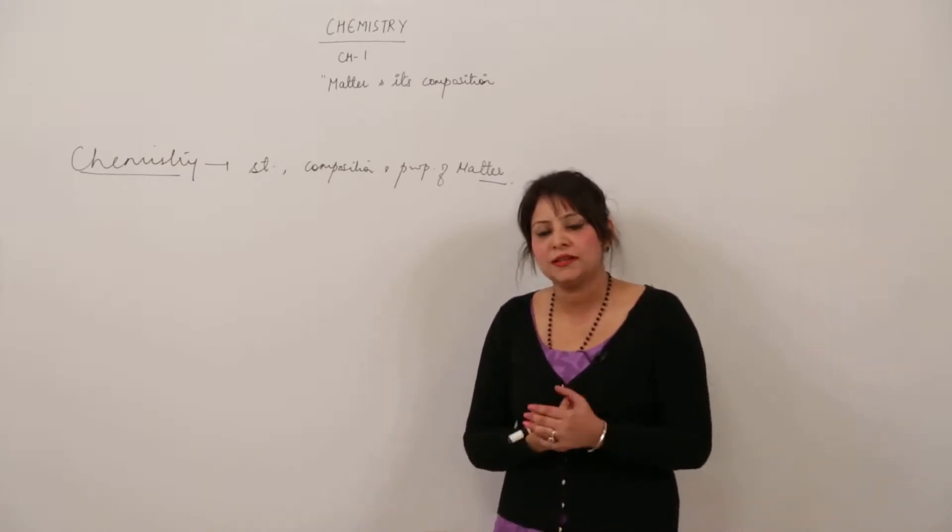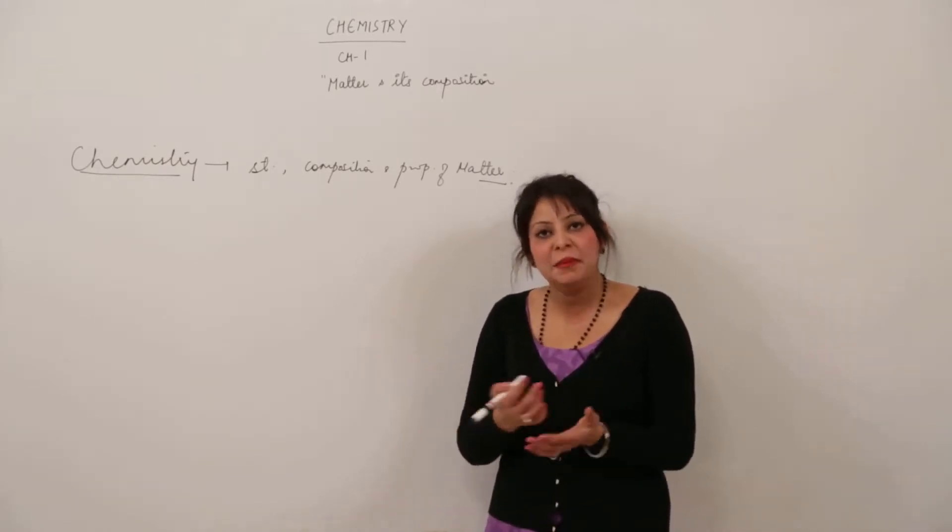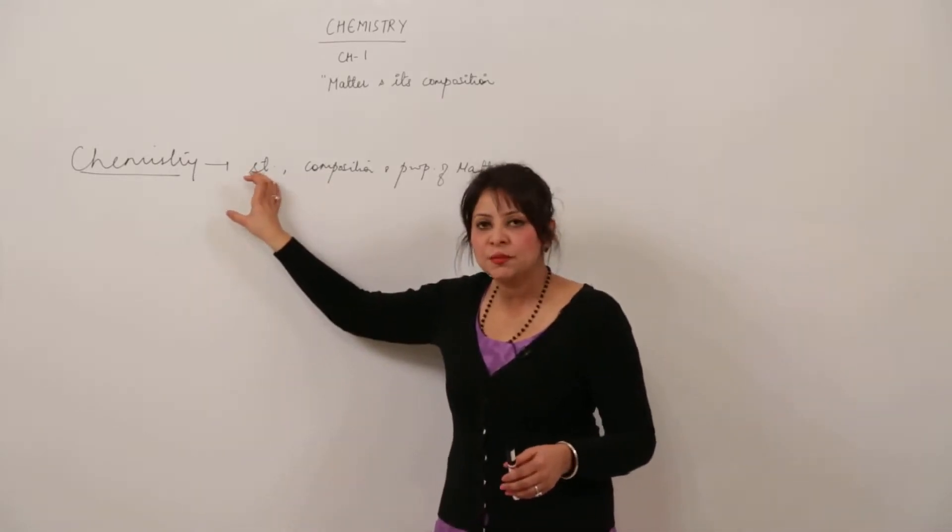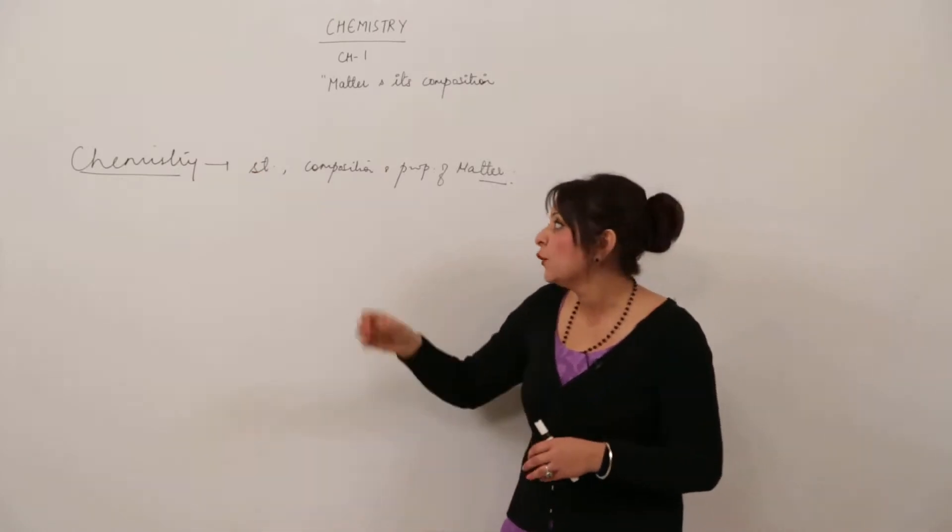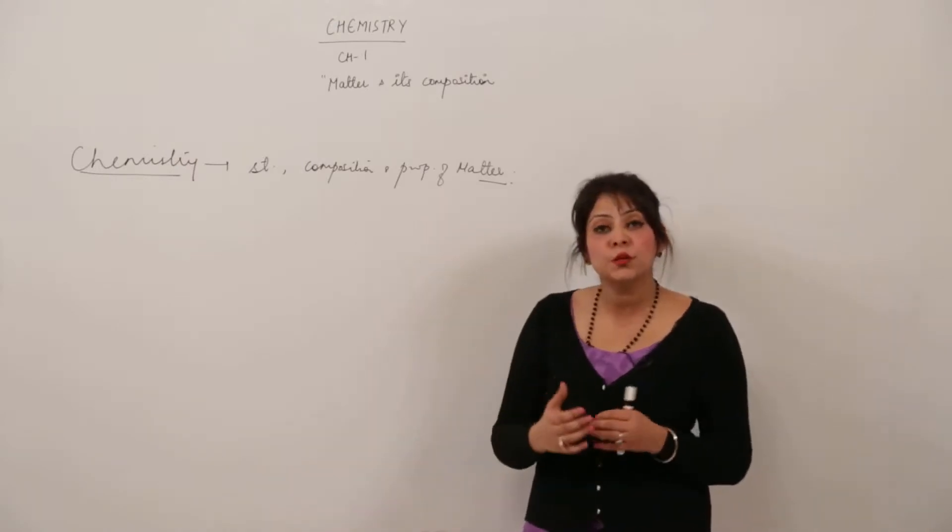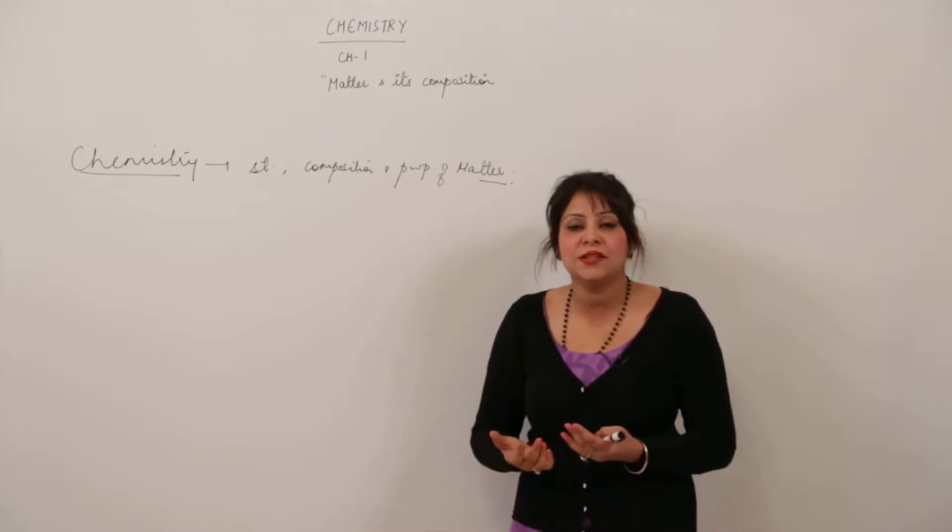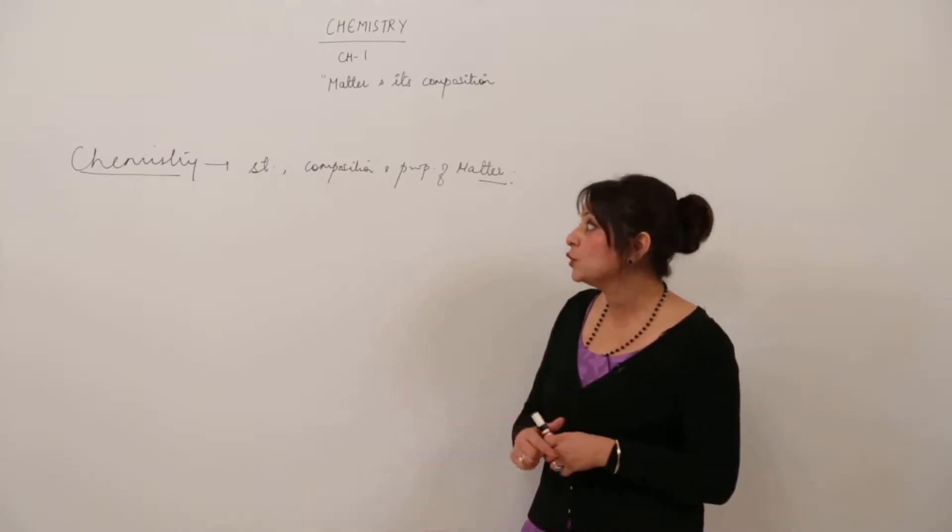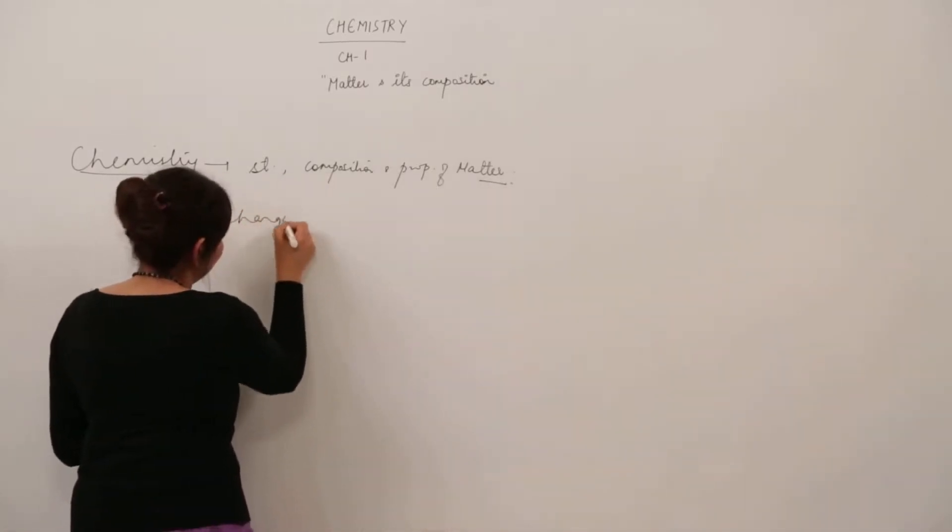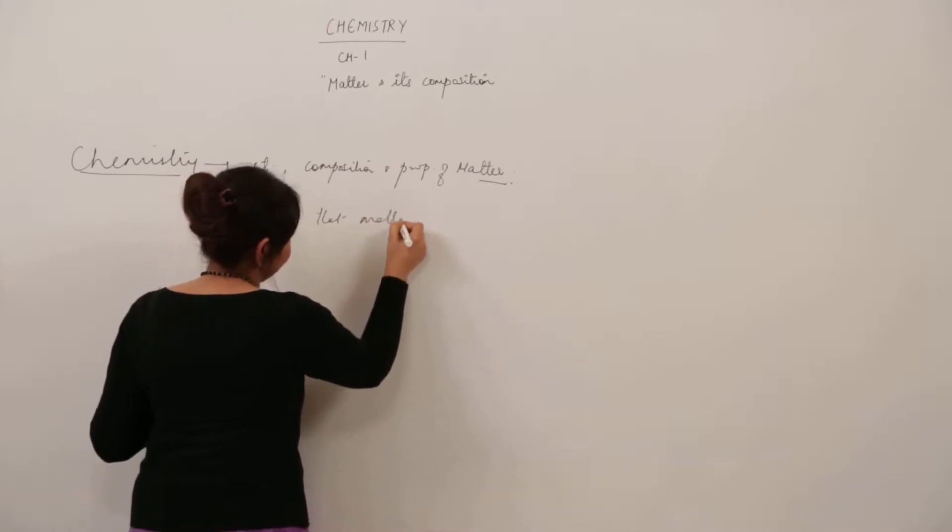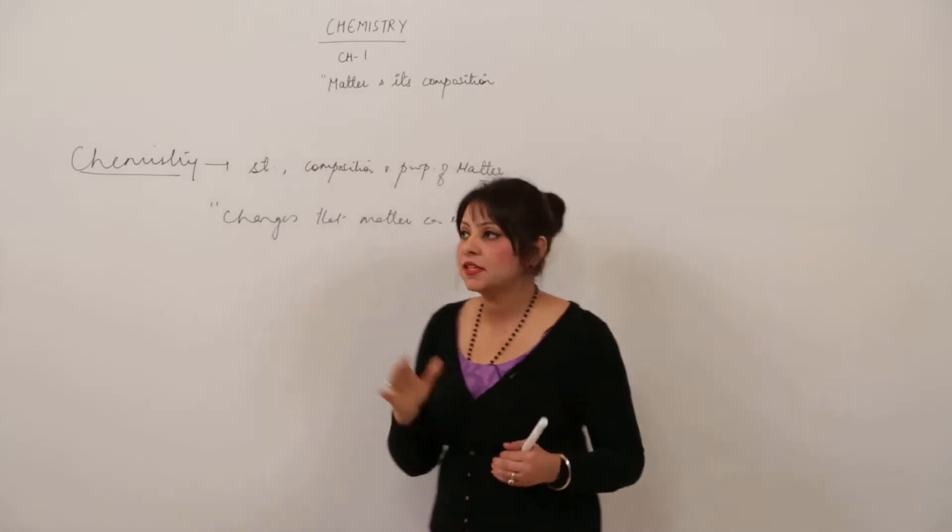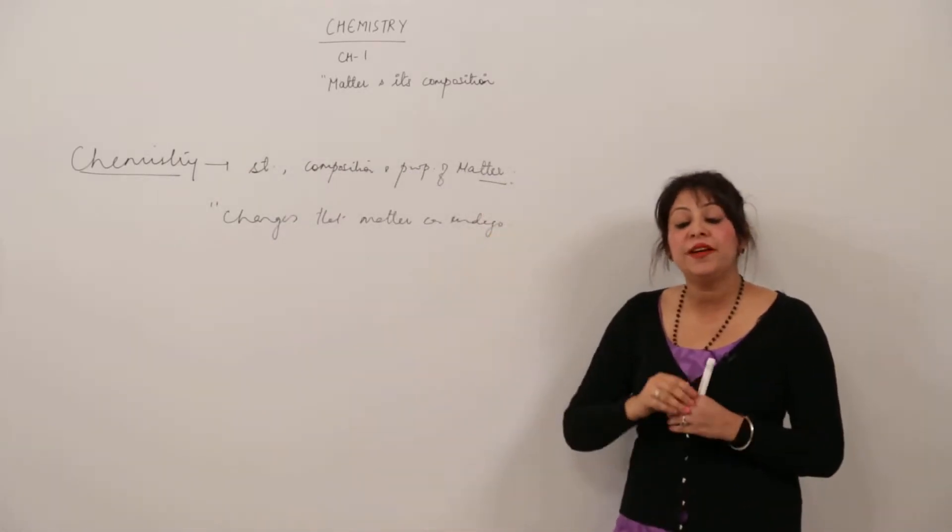Anything which you see has some volume and contains matter. Chemistry deals with structure—the composition and basic arrangement of particles—and properties like melting point, boiling point, electrical conductivity, and the changes that matter can undergo. The scope of chemistry is not limited.